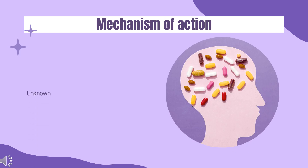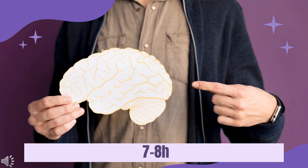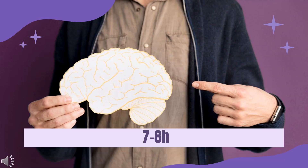Mechanism of Action. The precise mechanism of Brivoracetam's anti-epileptogenic activity is unknown. Half-life: 7–8 hours.